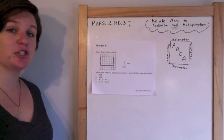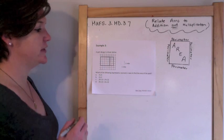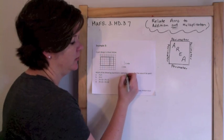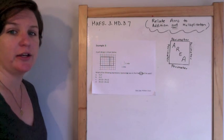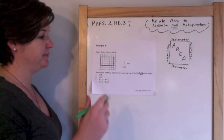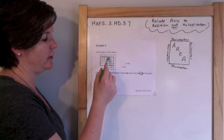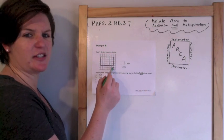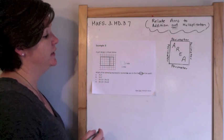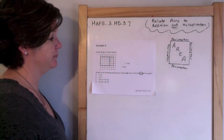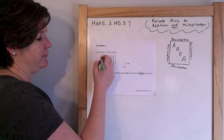Example 3: a park design is shown below. Which of the following expressions represents a way to find the area of the park? Here's the park design — it looks like a rectangle with a smaller rectangle attached. The whole bolded region is the area of the park.